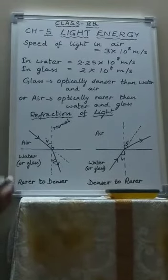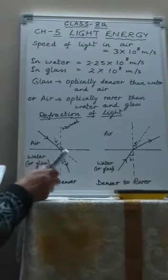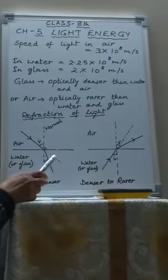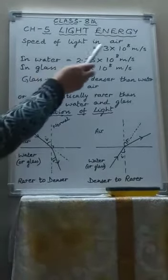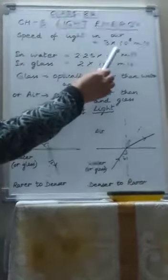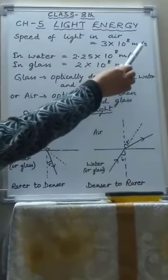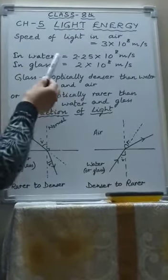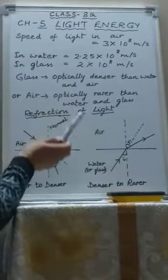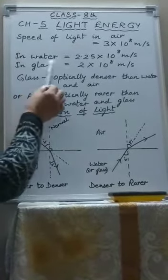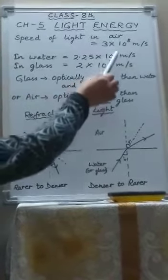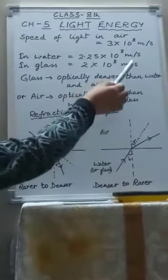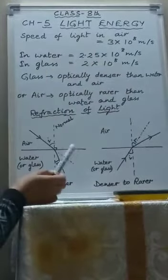In the previous class you have already studied that light travels fastest in air. The speed of light in air is 3 × 10⁸ metres per second. But when light enters another medium such as water or glass, the speed of light decreases. The speed of light in water is 2.25 × 10⁸ m/s, while in glass it is only 2 × 10⁸ m/s.